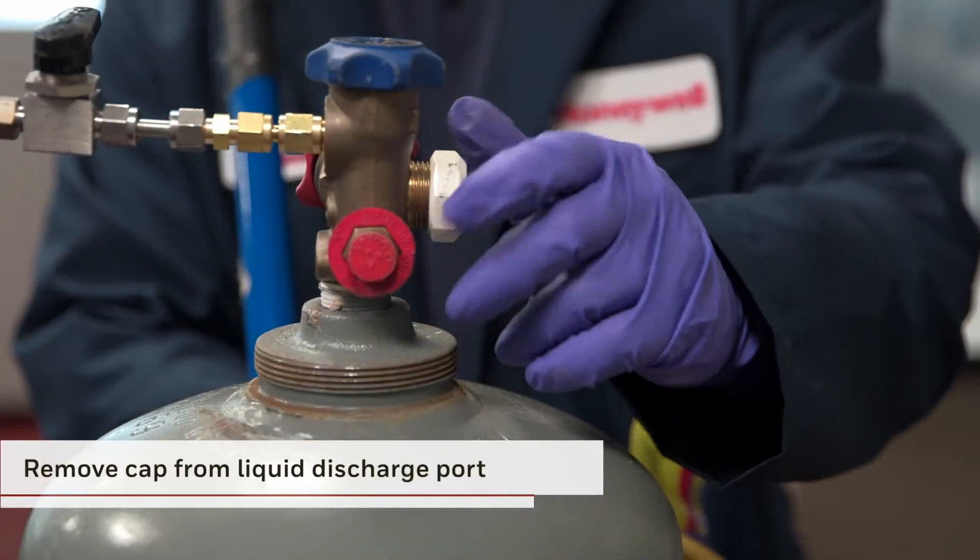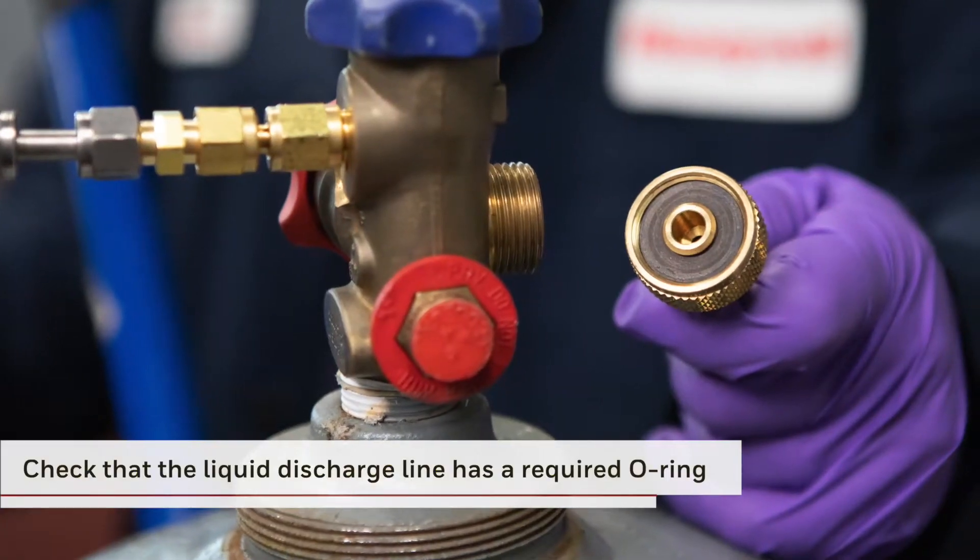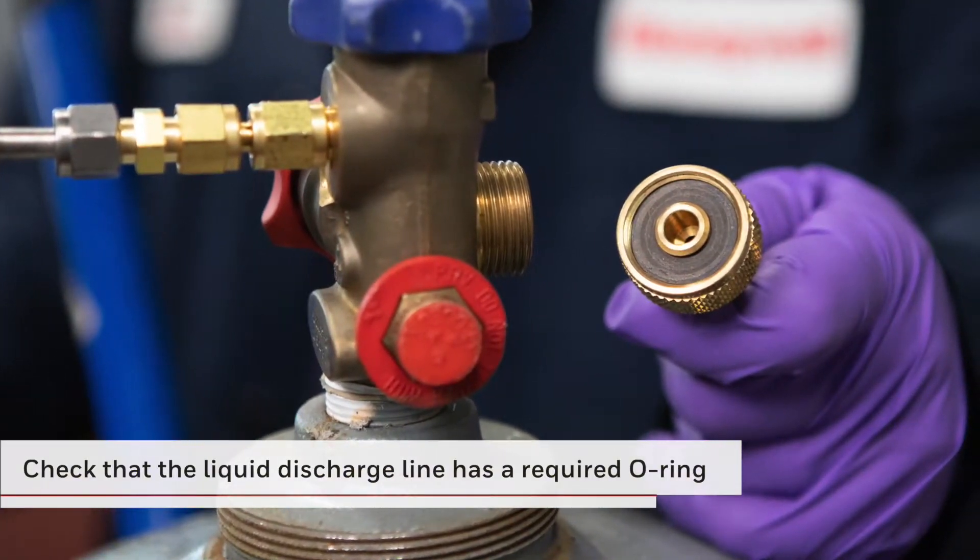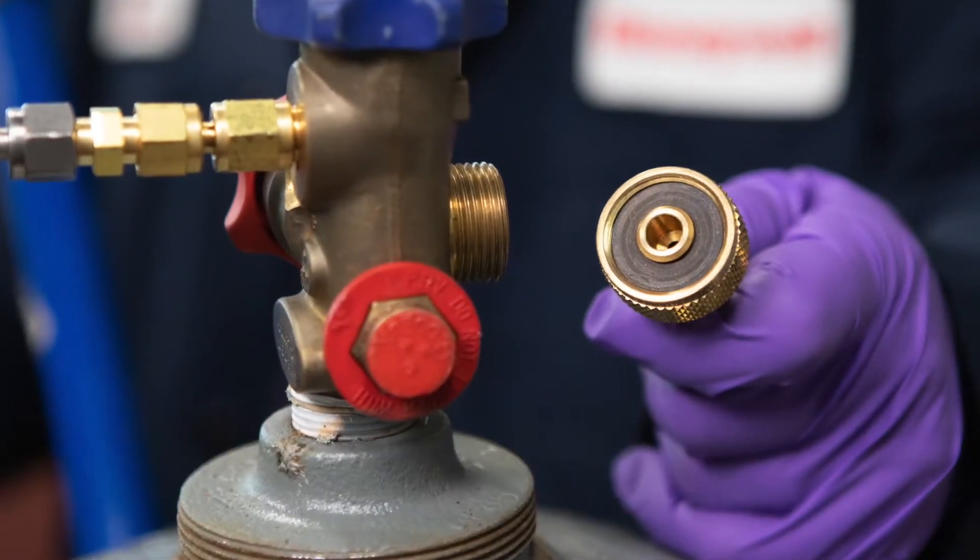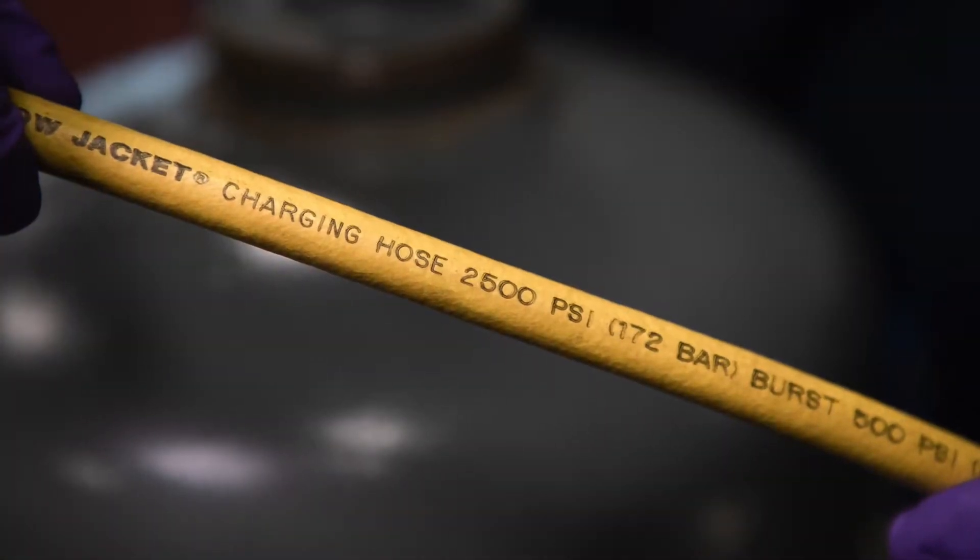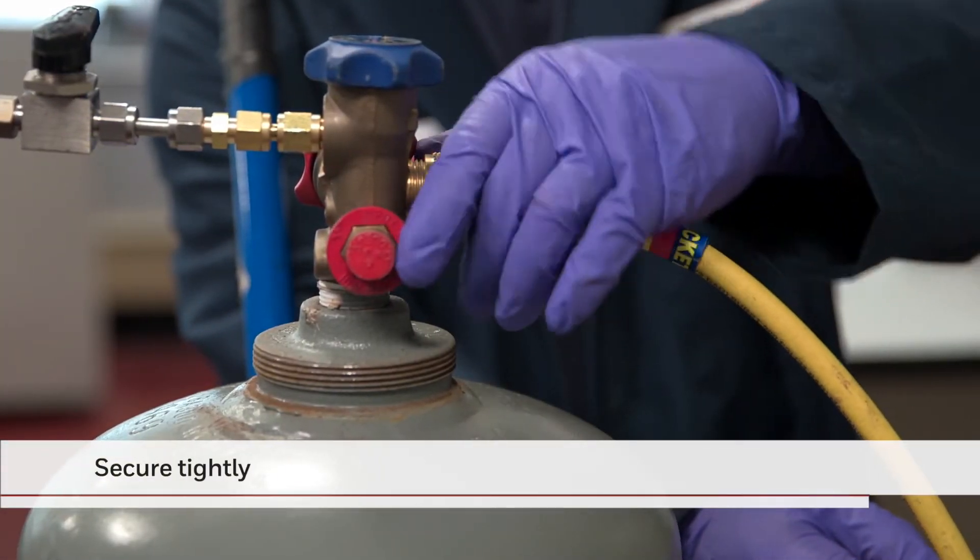Next, remove the cap from the liquid discharge port on the blowing agent cylinder. Before attaching the liquid discharge line to the large port on the blowing agent cylinder, make sure to check for the required o-ring. It is also critical to ensure that the line is rated for the desired pressure and the hose material is compatible with the blowing agent. Connect the liquid discharge line and secure tightly.